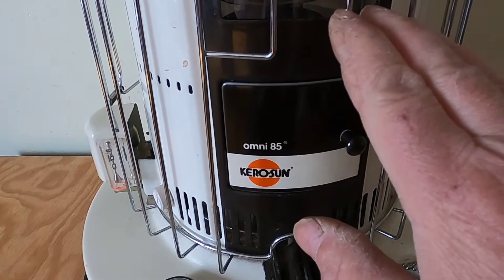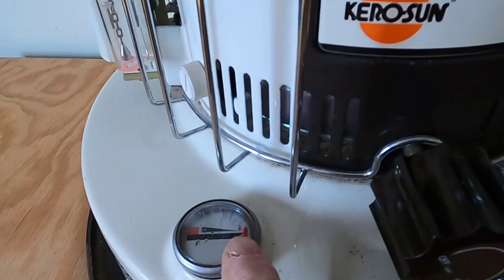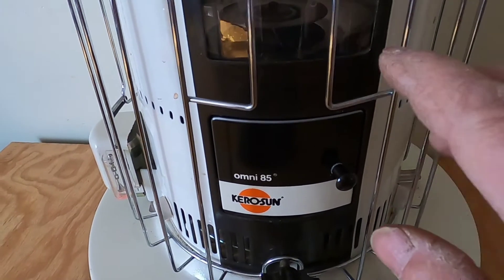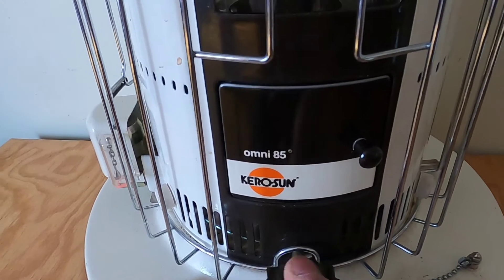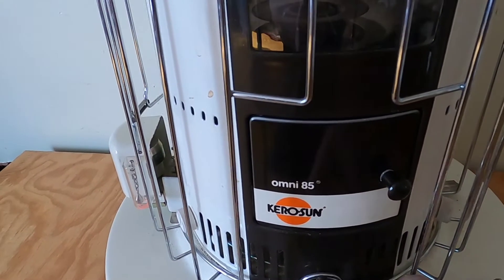The way the manual says to clean this out, to clean your wick, is to run this until there's no fuel in it. Let the wick burn itself dry. Once you do that, you raise the wick all the way up. Obviously, this is after it cools.